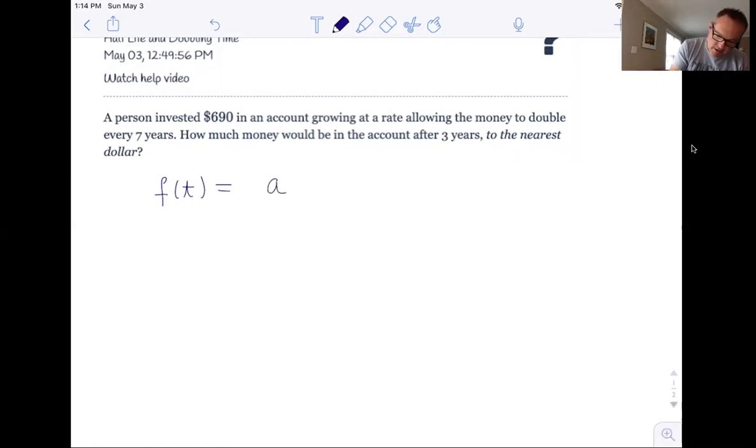A is an initial amount. If you're doubling, the base is two. And the exponent is t over d, where d is your doubling time. So just write that here. And again, this is your formula when something doubles over a fixed period of time. But you could see if something tripled, your base would be three or quadrupled, it would be four. There's nothing really special about two.